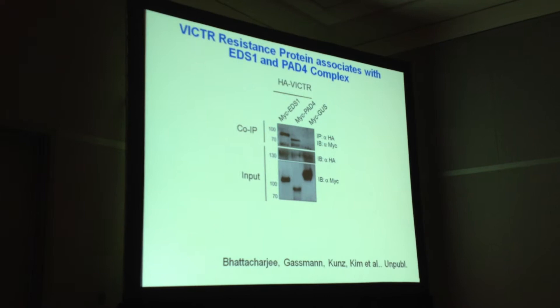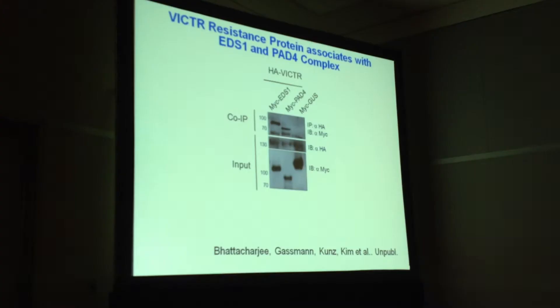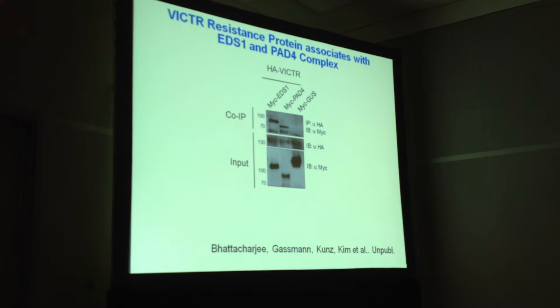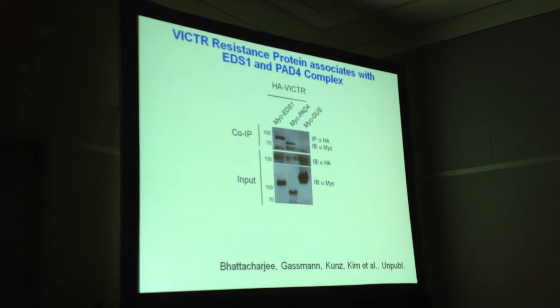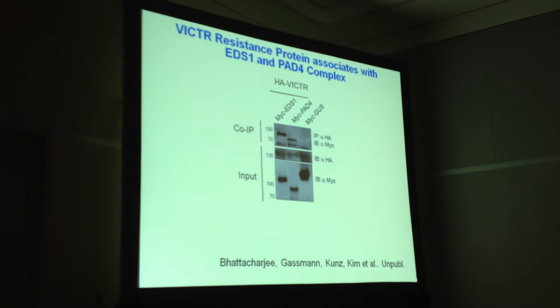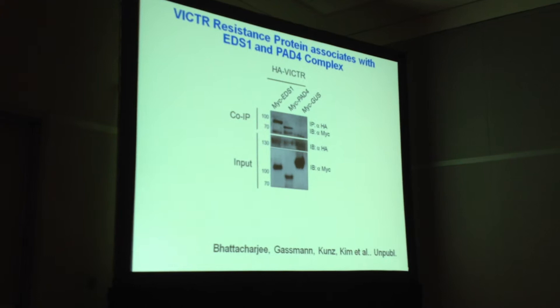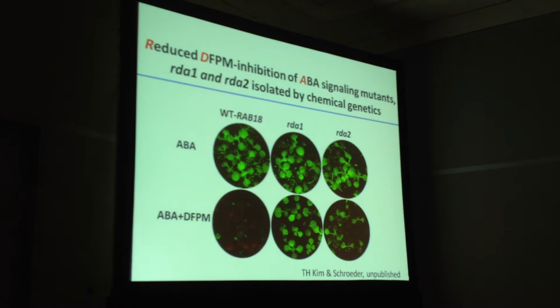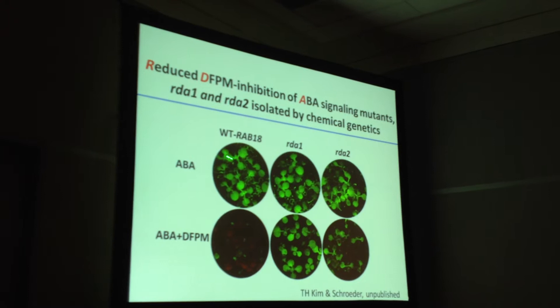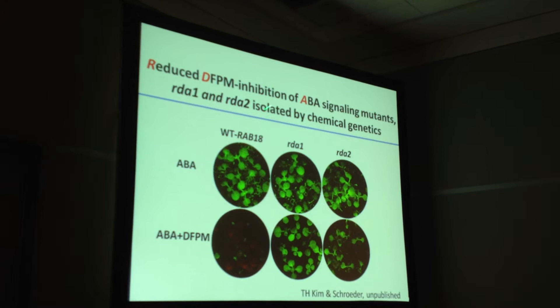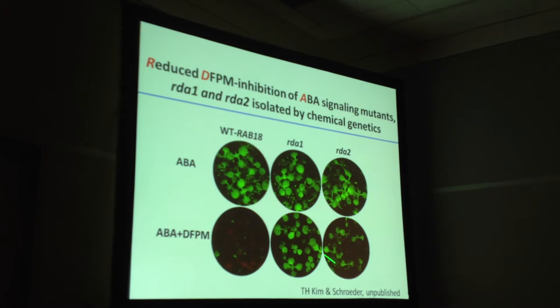In my lab, we're really interested in how DFPM-induced effector-triggered immune signaling rapidly down-regulates ABA signaling. We have a powerful system — a small molecule added at a defined time point — for time-course studies in guard cells. The next step is forward chemical genetics: Tae-hoon mutagenized the RAV18-GFP reporter line, strongly induced by ABA, and selected mutants that, even in the presence of DFPM, maintain ABA-induced fluorescence.